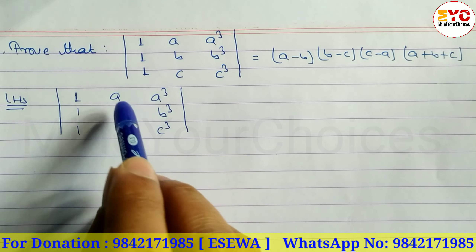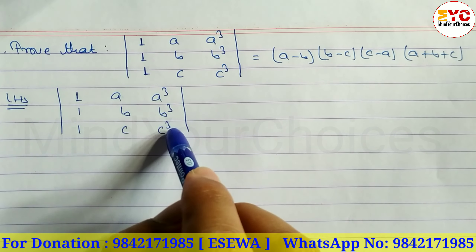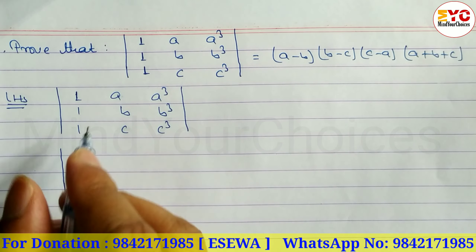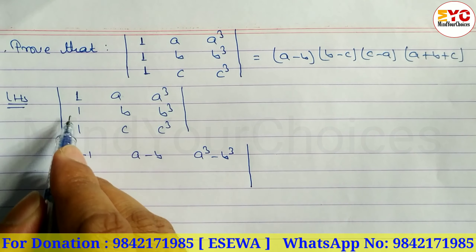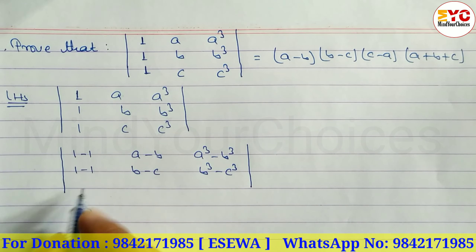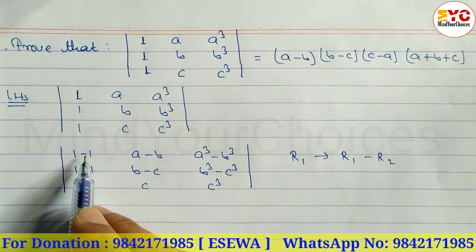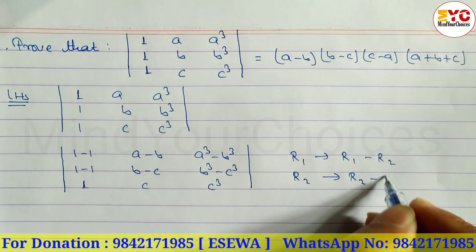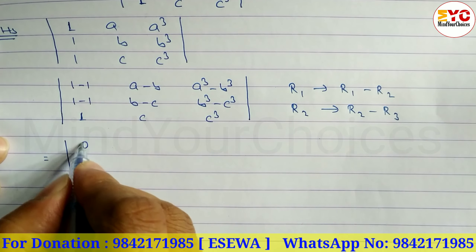We subtract row 1 from row 2 (R2 → R2 - R1), giving us (a-b) in one column. Then we subtract row 2 from row 3 (R2 → R2 - R3), giving (b-c). After these row operations: 1 minus 1 is 0, 1 minus 1 is 0, leaving 0, 0, 1 in the appropriate positions.